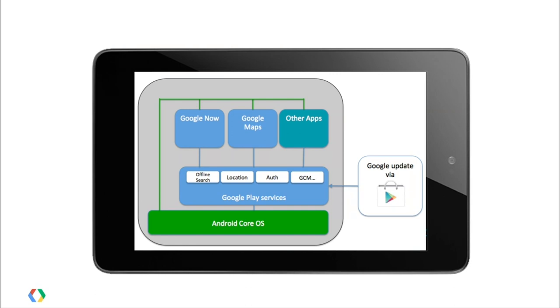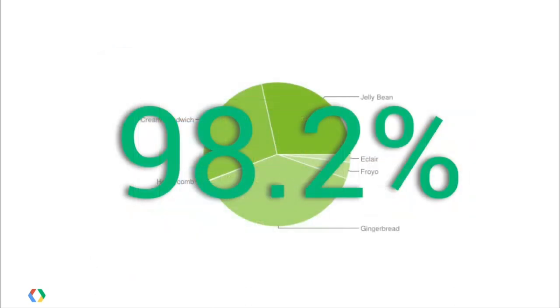Why is it on Android 2.2 and above? Android 2.2 and above is now 98.2% — and growing — of the active Android users that hit the Play Store. Also, Froyo added in some really handy APIs, things like being able to save applications to mass storage, and these are the kinds of things that most applications using Play Services are probably going to be using.